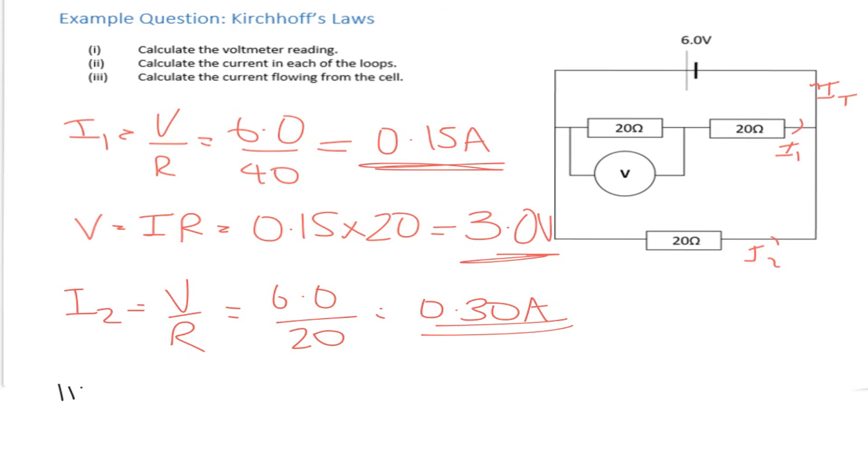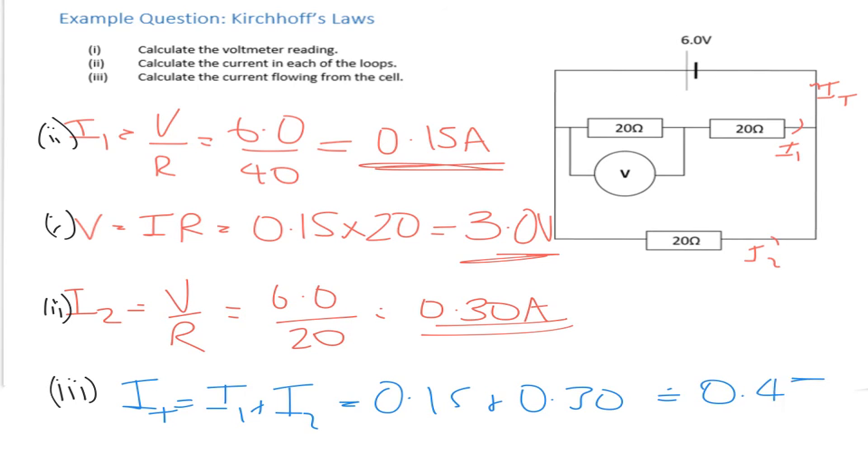So in terms of part 3, we're going to apply Kirchhoff's current law, so it must be 0.15 plus 0.30, because they both come together to form that one. So 0.15 plus 0.30, which gives you 0.45 amps.